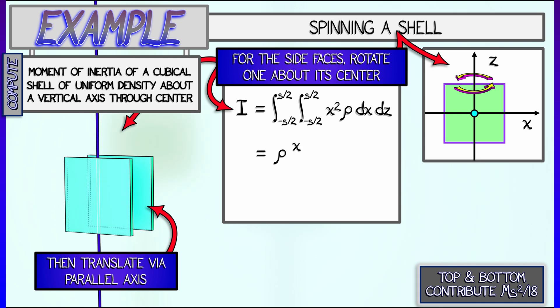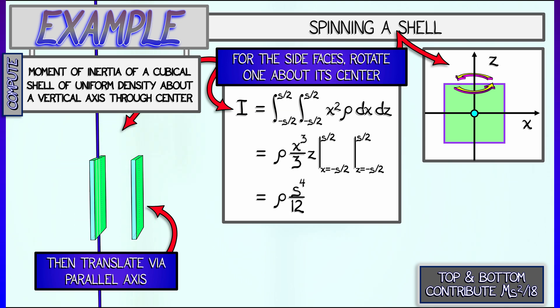This is going to be easy. Basically, x squared integrates to x cubed over 3 times z. Evaluating these from minus s over 2 to s over 2 and multiplying by ρ gives us ρ s to the fourth over 12, which, substituting in for mass, gives us ms squared over 72. That has not much moment of inertia - it's half of what a top or bottom face was.